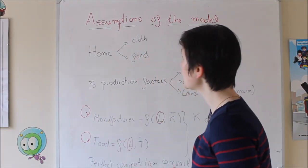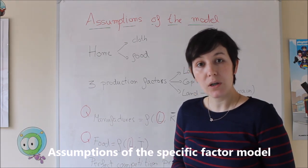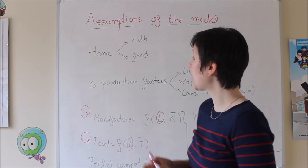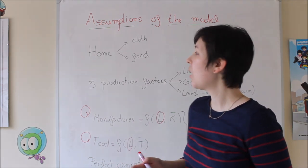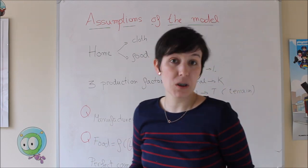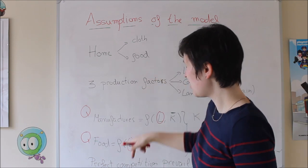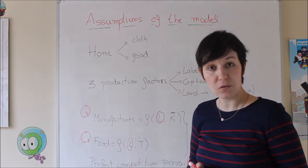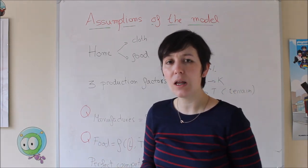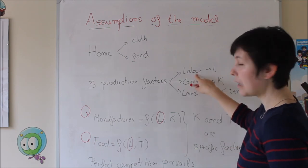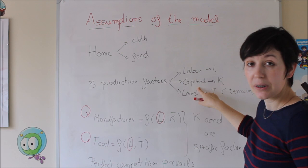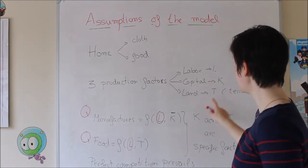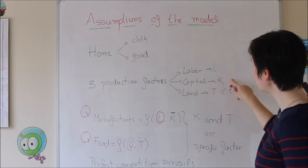Now we are going to see the main assumptions of the Specific Factor model. We are going to start in a closed context, so that means we just have one economy that we are going to call home. This home economy is going to produce two kinds of goods: cloth or manufacturing, and food, which is the agricultural one. For production, this economy has three possible production factors instead of one like in the Ricardian model. We have labor (L), capital (K), and land (T, from terrain).